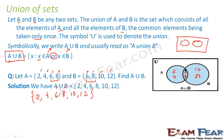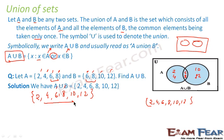Now when we say A union B, it is everything shaded in blue — the entire diagram. So A union B = {2, 4, 6, 8, 10, 12}. You can see the result from the direct method and from the Venn diagram method are the same. Thus we can use either a Venn diagram or the normal method.